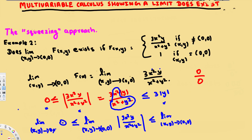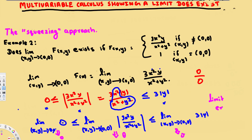Now for 3|y|: since y approaches zero, plugging in y=0 gives zero. So we have zero on the left side and zero on the right side. According to the squeeze theorem, if both sides equal zero, the value in between must also be zero. Therefore the limit is zero, the limit exists, and that's how we determine whether the limit exists for a multivariable function using the squeezing approach.